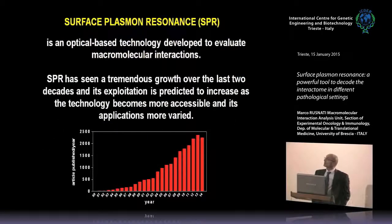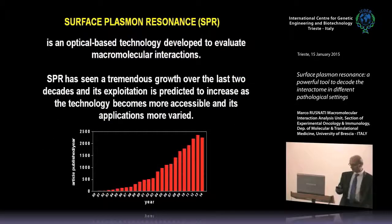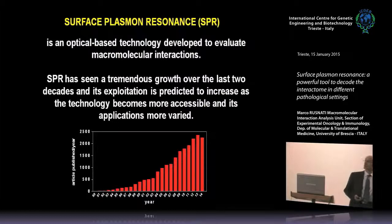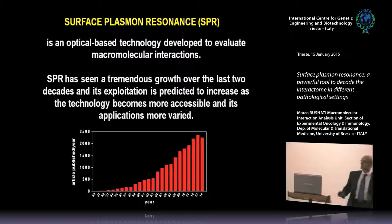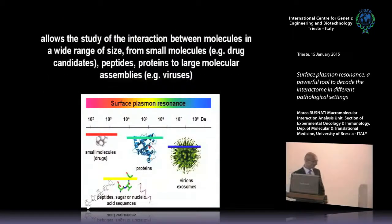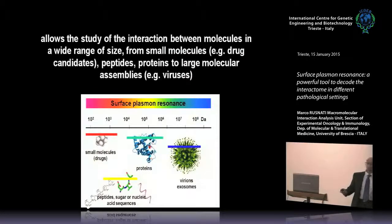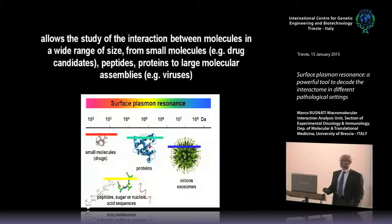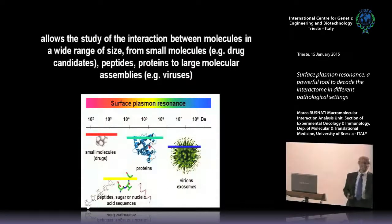We'll start by saying that surface plasmon resonance — the acronym is SPR — is an optical-based technology that allows the study of the interaction occurring between macromolecules. As you can see here, the SPR technology has been more and more exploited during the last 20 years in a variety of fields of research. This success is at least in part due to the fact that by SPR you can study very different molecules, starting from small molecules, such as those used in drug discovery, arriving to very big aggregates, such as viruses and exosomes.